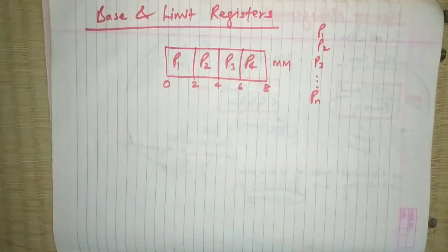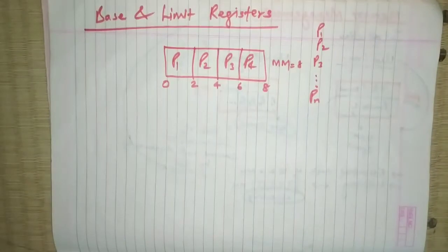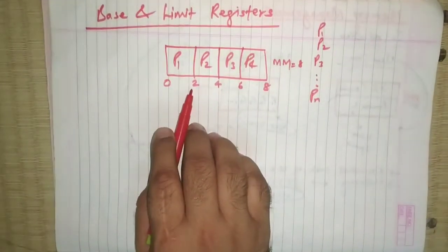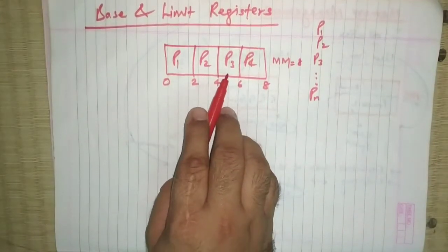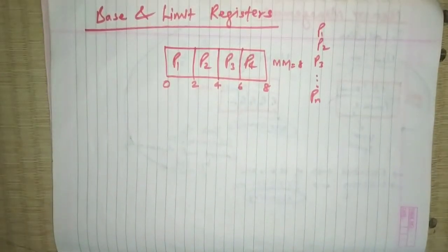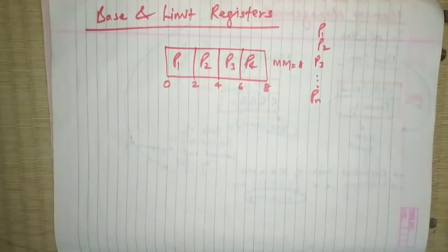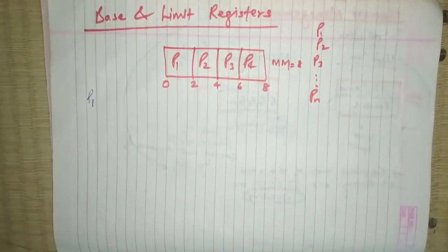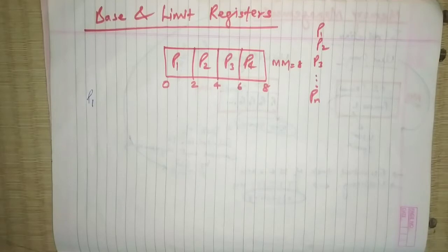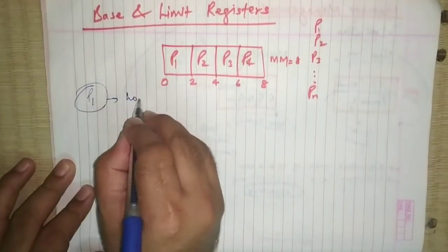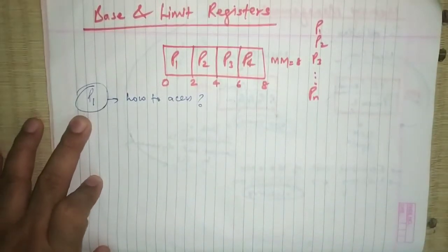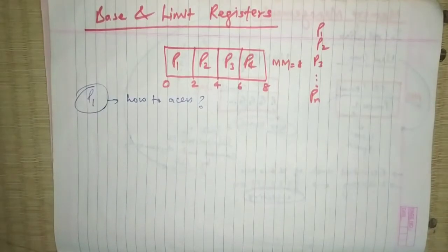We have considered that the memory starts from 0 and ends at 8, so the total capacity is 8 units. Process 1 has taken 2 units, process 2 has taken 4 units, process 3 has taken 2 units. Now how will anyone come to know where process 1 is situated? If anyone wants to access process 1, how will it be accessed, since it has been stored in memory?